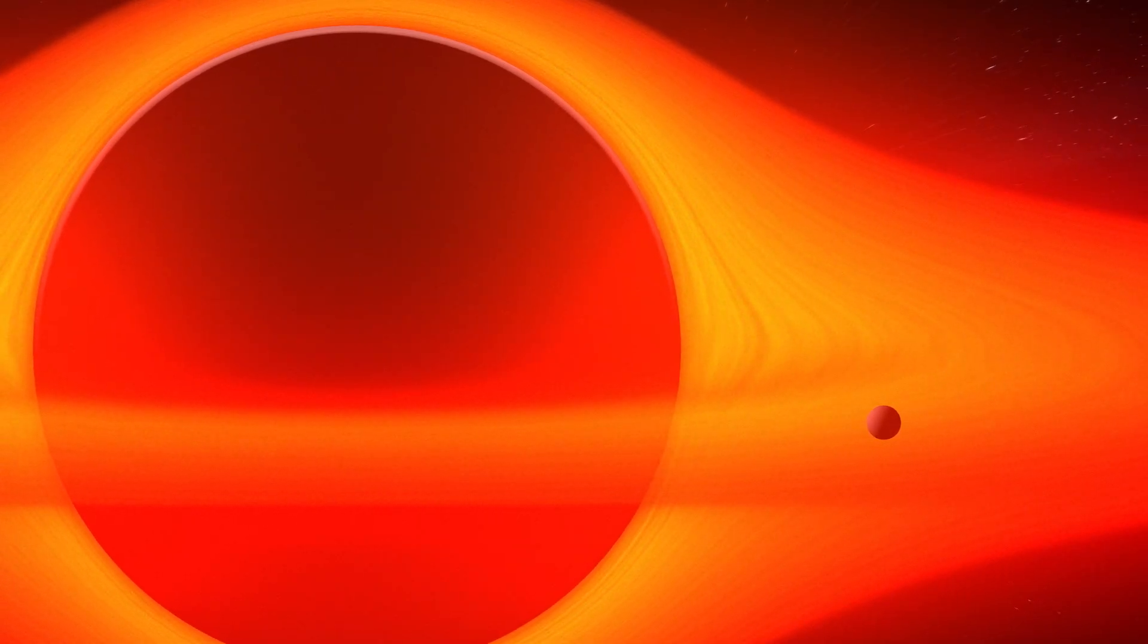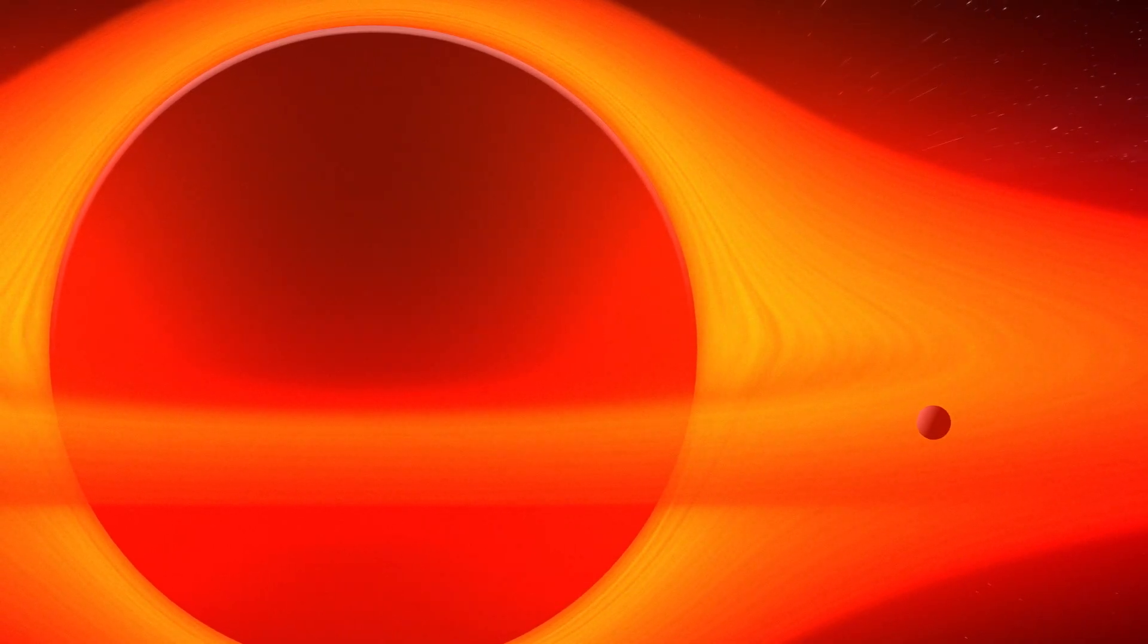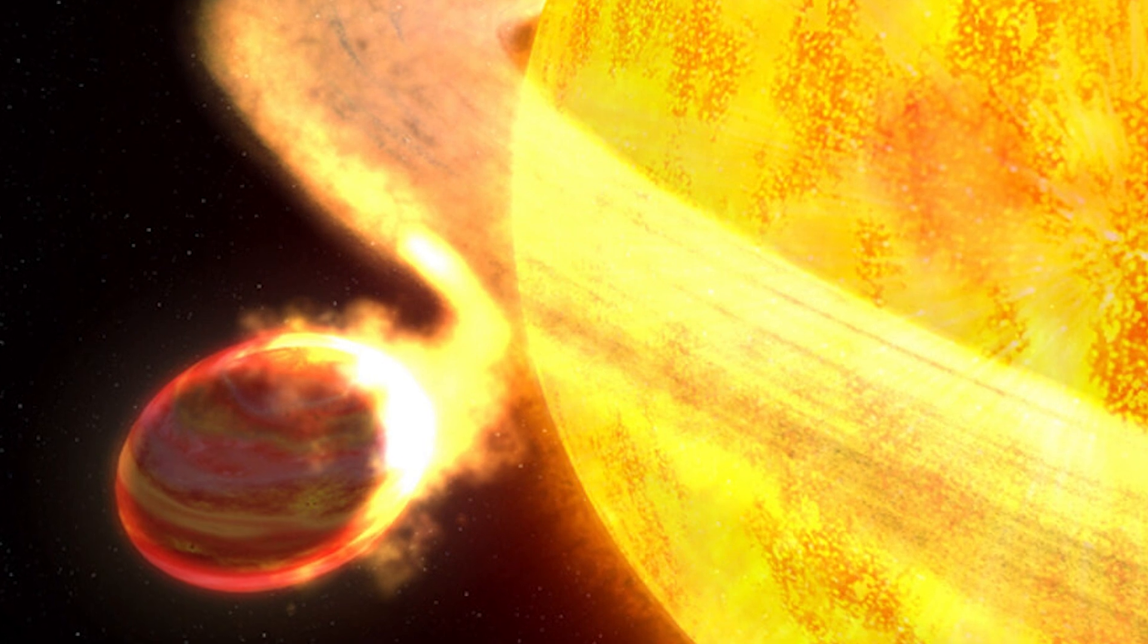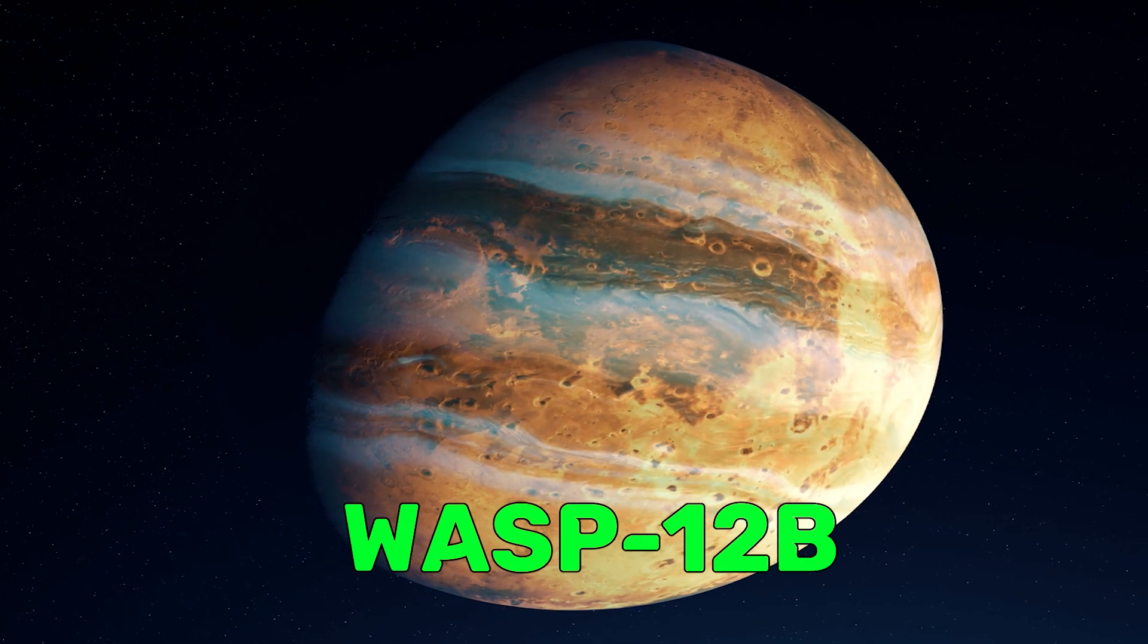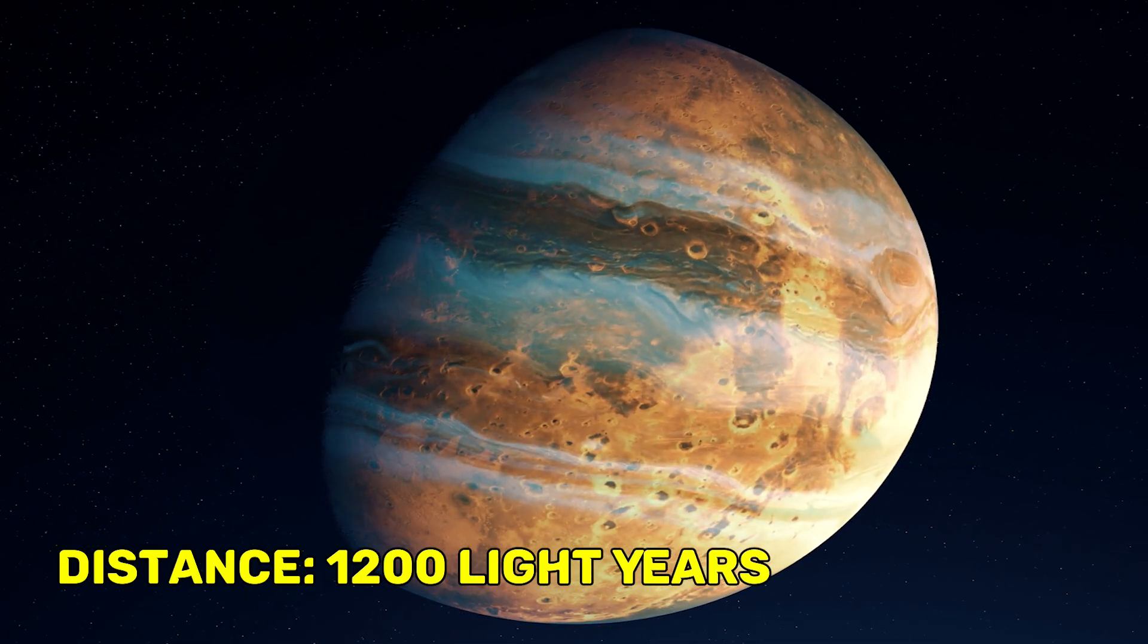This proves that planets could exist in a variety of environments, but our next planet might not exist for too long. WASP-12b is a Jupiter-sized exoplanet located 1200 light-years away.